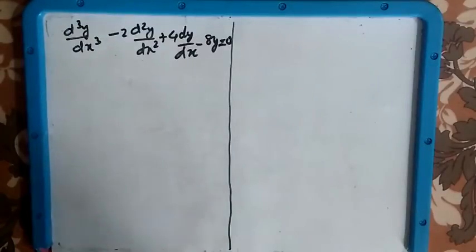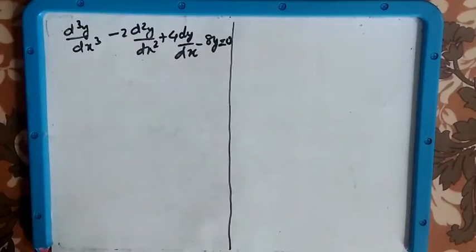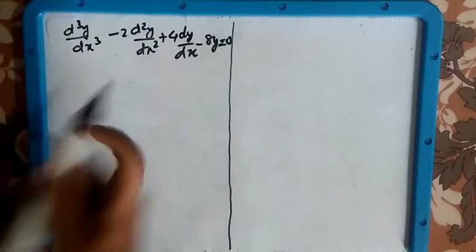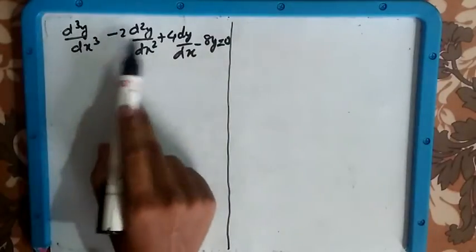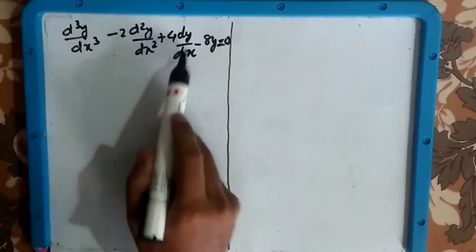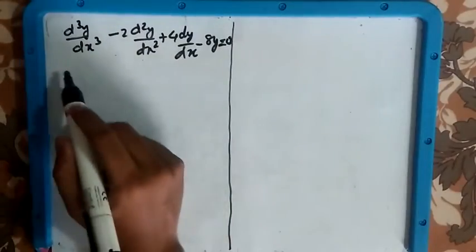Today we are going to see how to solve a given differential equation and get the general solution. The question here is d³y/dx³ - 2d²y/dx² + 4dy/dx - 8y = 0.